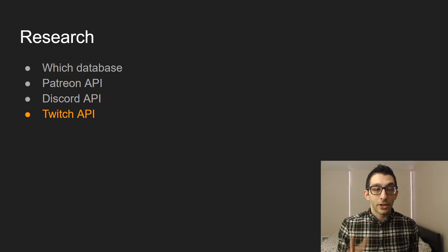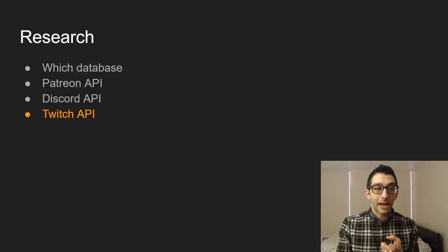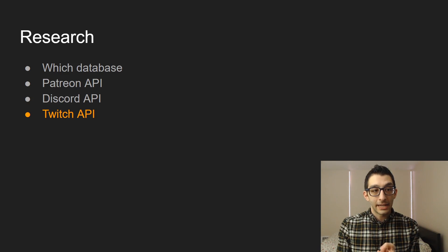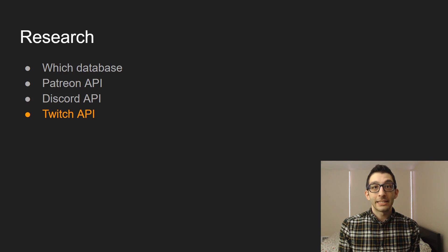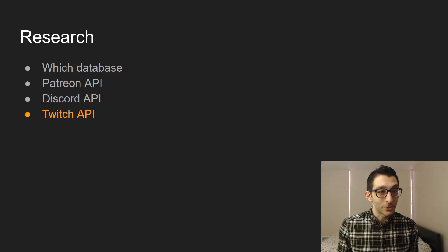For the Twitch API, there are currently two: version 5 and Helix. I had a member of Twitch staff in my channel at the time and he said I should use Helix, so I didn't do much more research — I just went with that.